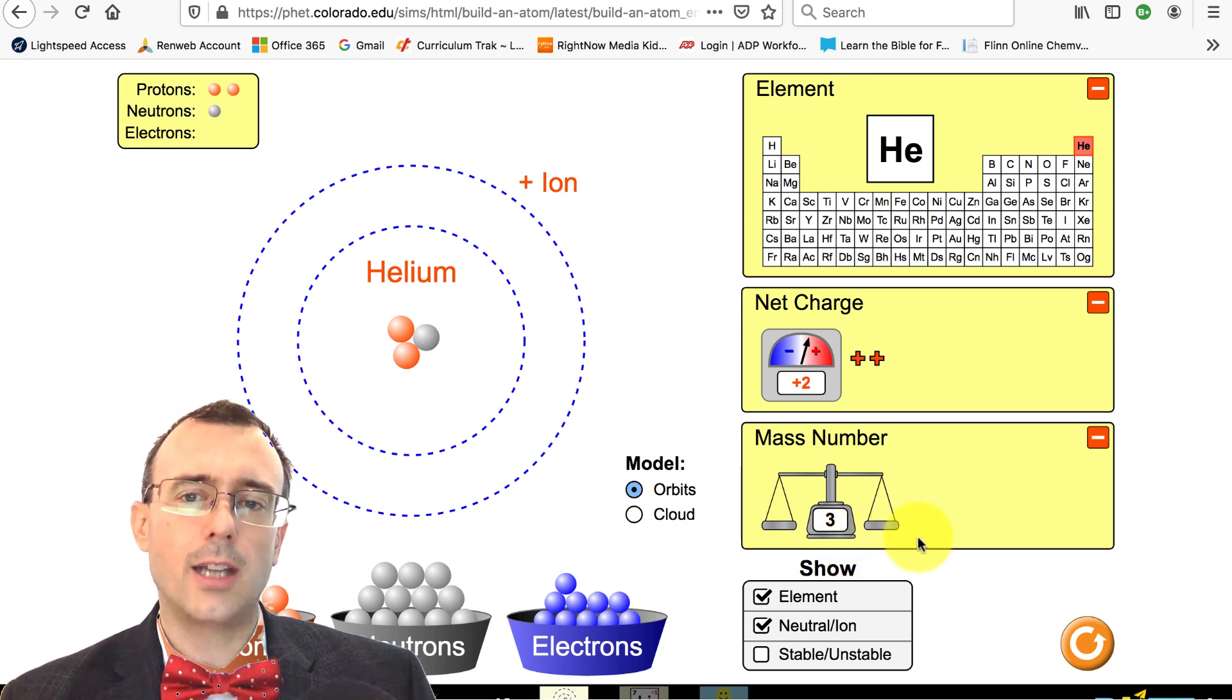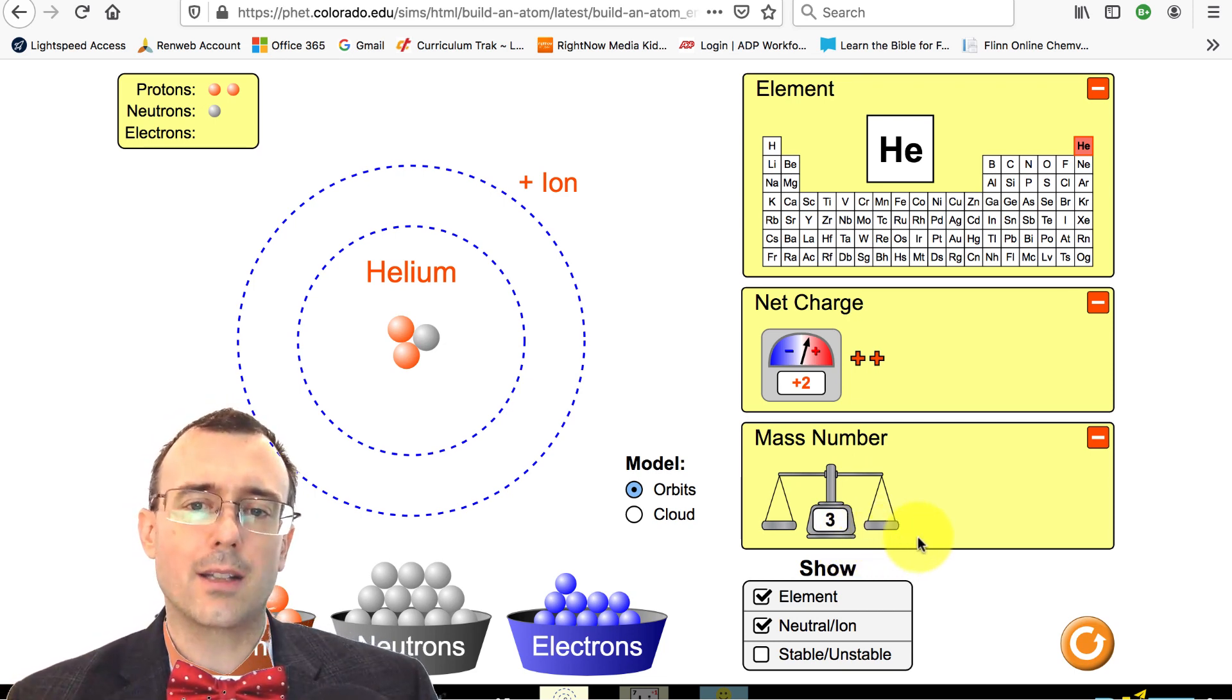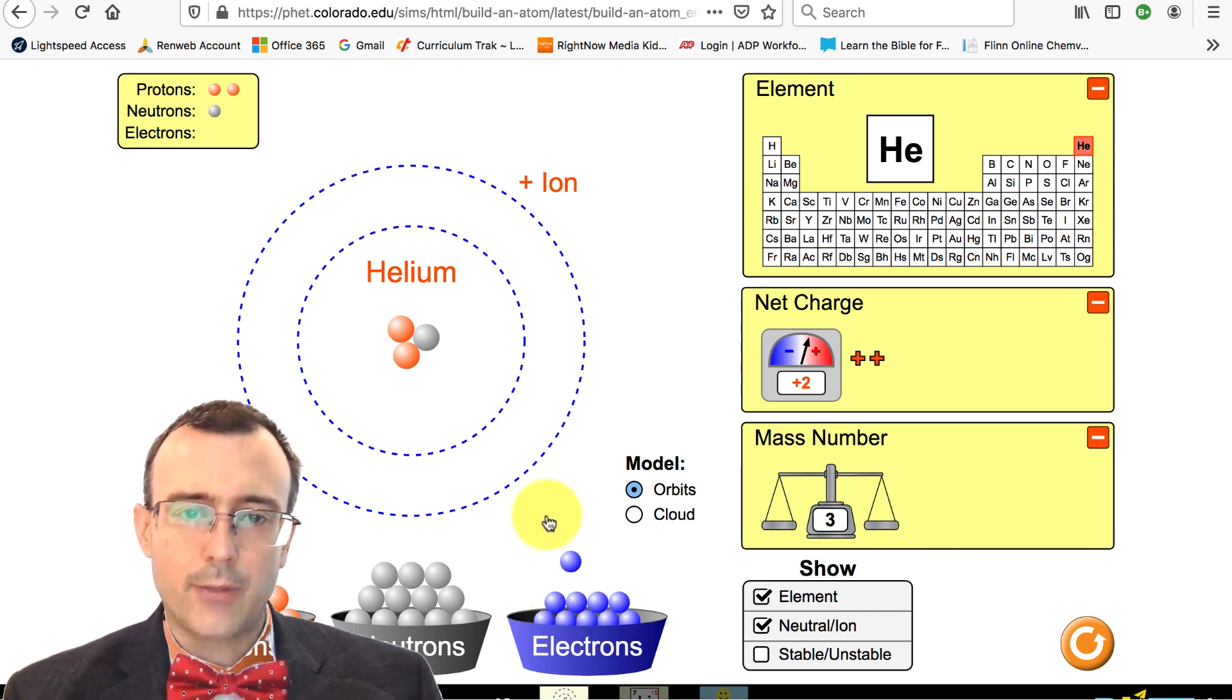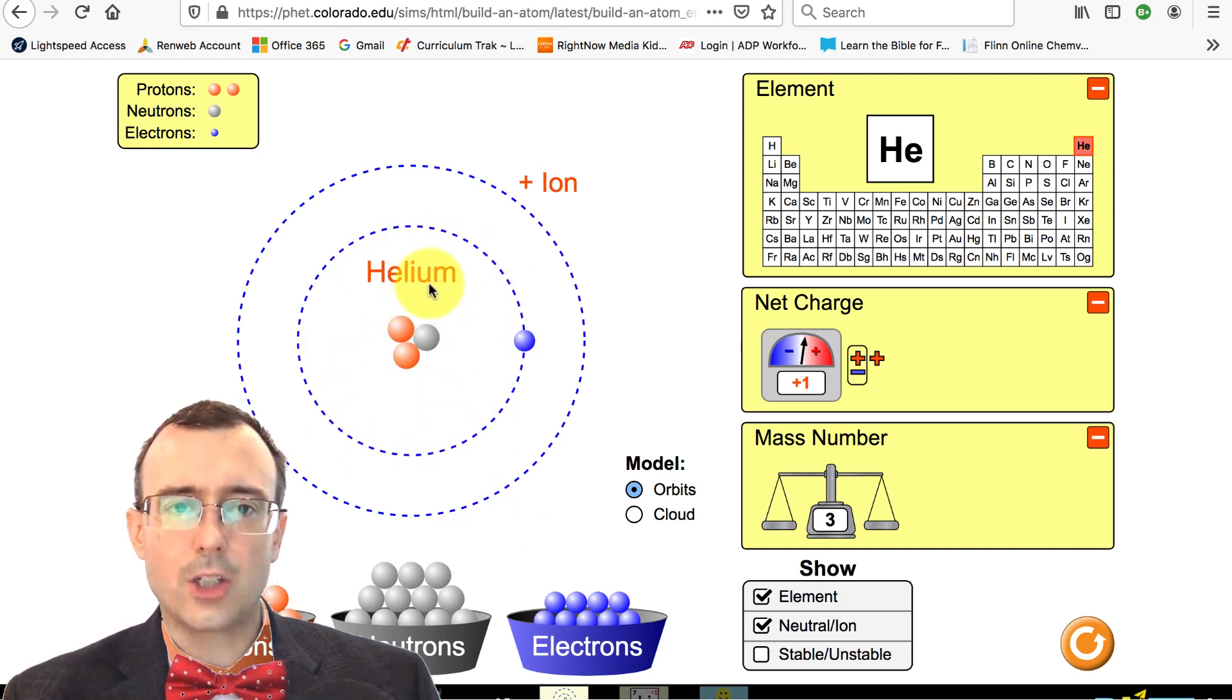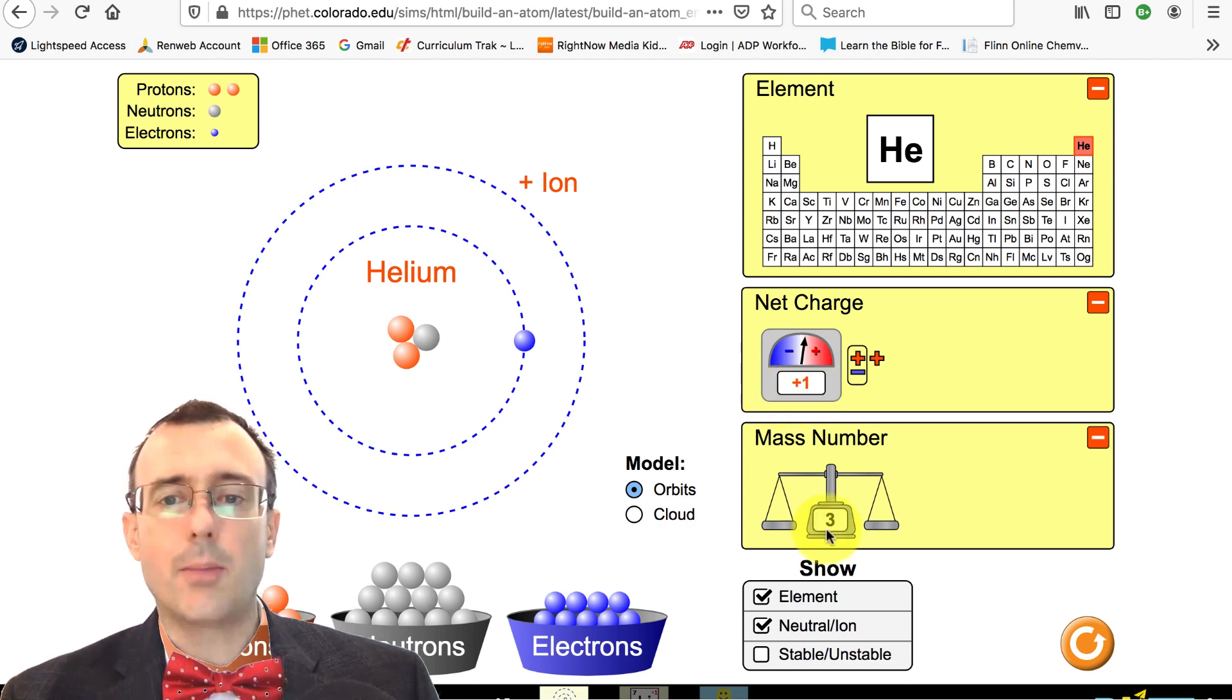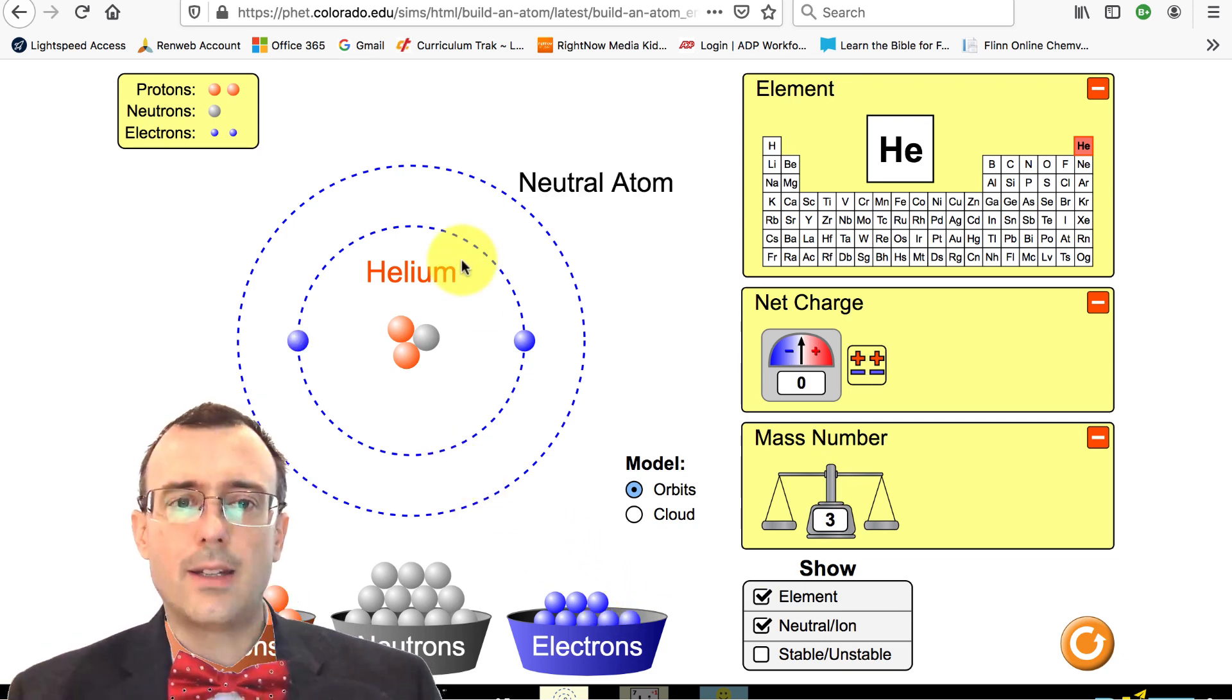The mass number is essentially the approximate mass of the atom. So it's the mass of the atom rounded to the nearest whole number. You can also add electrons. If you add an electron, we find that the electron doesn't go in the middle. It goes around on the outside here, and it doesn't change the element—it's still helium—but it did change something. It changed the net charge. The net charge went from plus two now to plus one, and the mass number is still the same, still three. So we can add another electron, and now that becomes neutral, but the mass number is still the same.